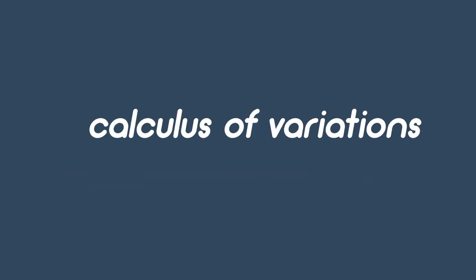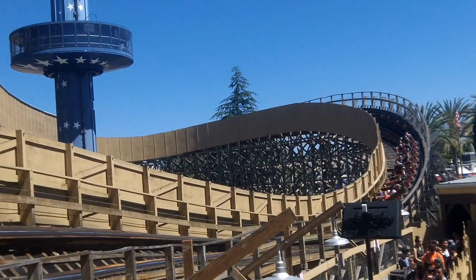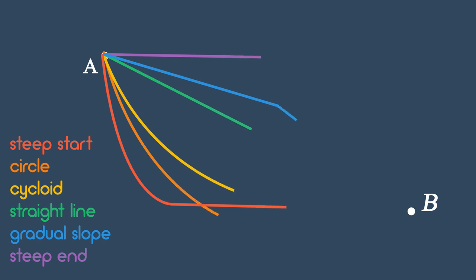The brachistochrone problem married math and physics, and also gave birth to the calculus of variations. It also has a lot of use in roller coaster design and engineering. And finally, it proves that in reality, the straight line might not be the shortest path time after all.